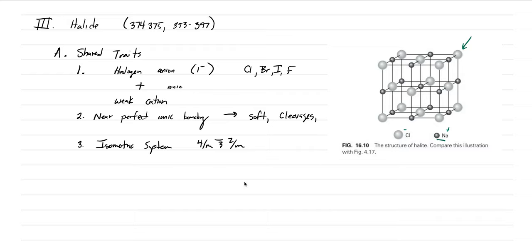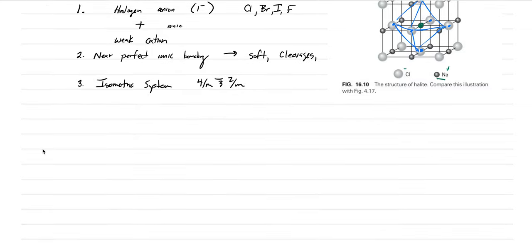I don't need you to memorize that these have octahedral and cubic coordination, but I do want you to recognize what those terms mean. If we take sodium and figure out its coordination, we count the arrangement of chlorines around it and find one, two, three, four, five, six surrounding it — and that arrangement is an octahedron, so this has octahedral coordination.